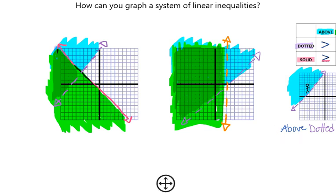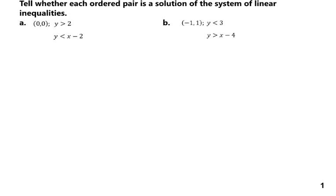So how would we determine if our solution was given to us not as a point on a graph, but as an ordered pair? So in this situation, if that were to happen, and we needed to tell whether each ordered pair was a solution of the system of linear inequalities, we would need to plug in the x and the y value to both equations.